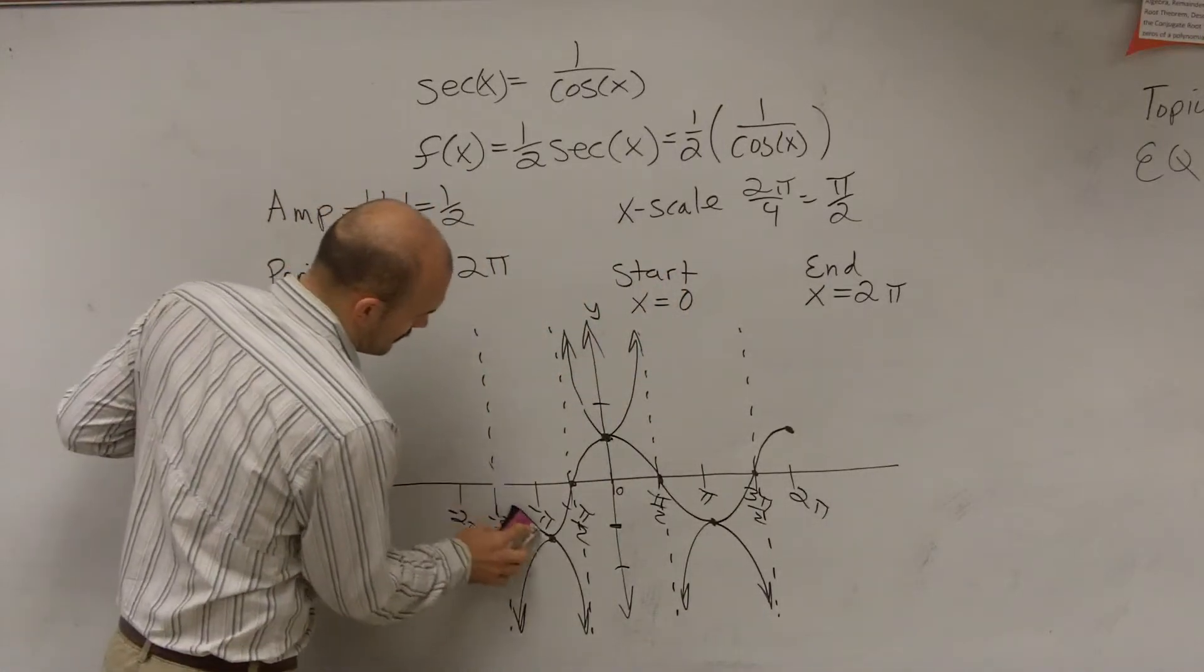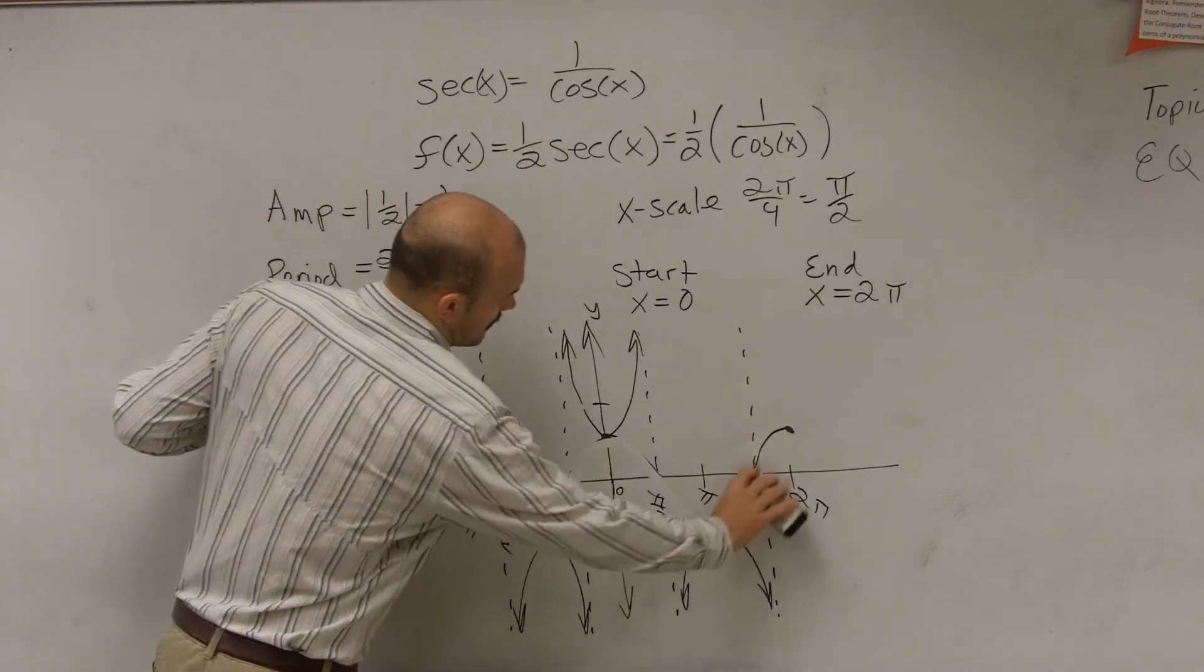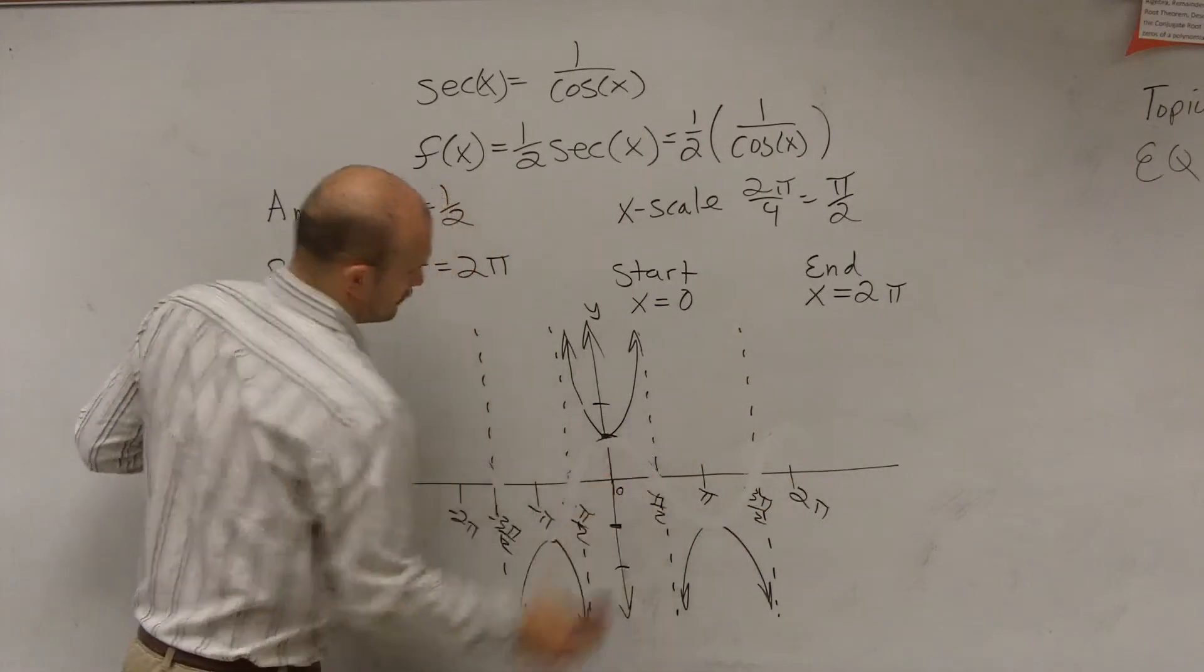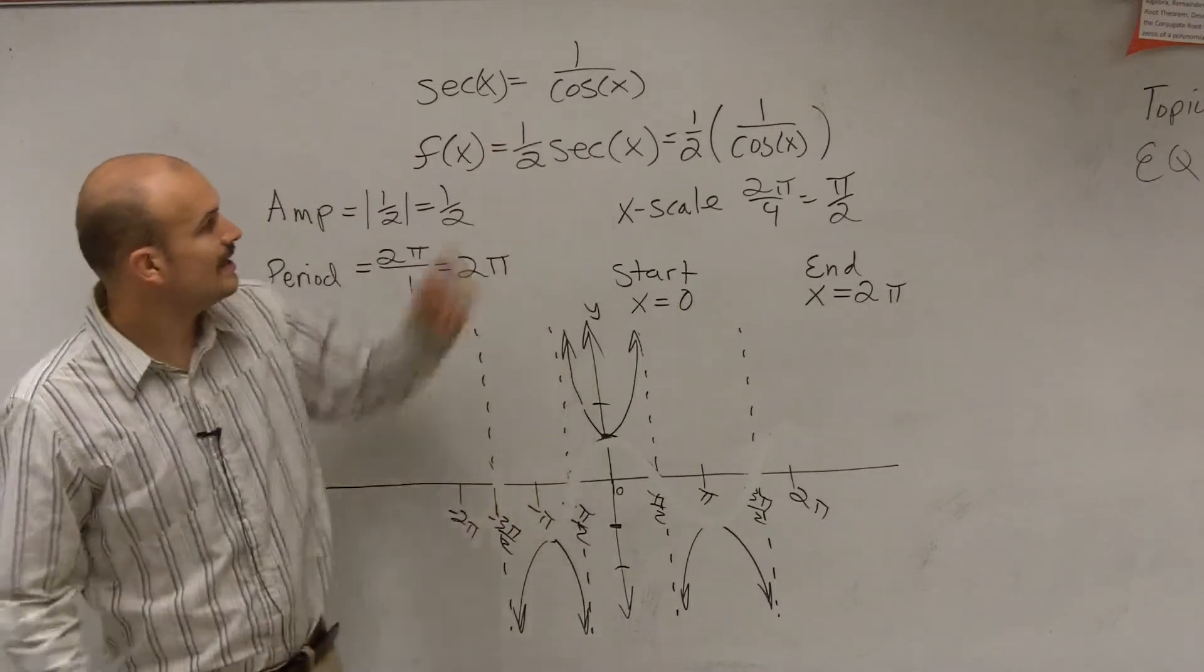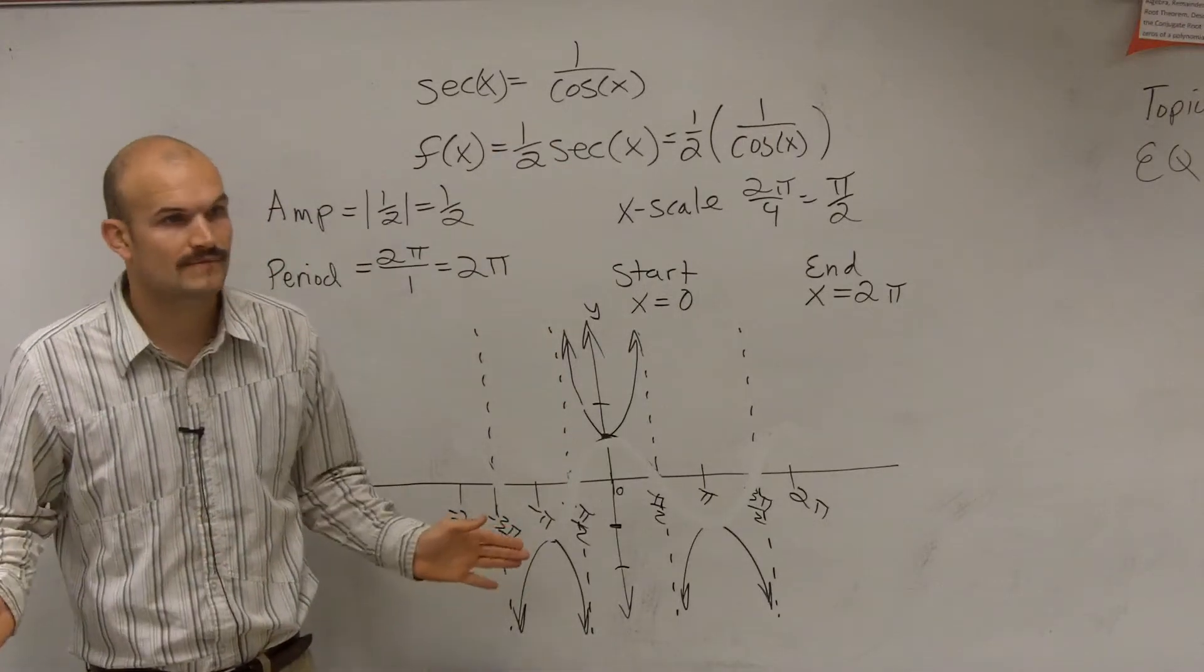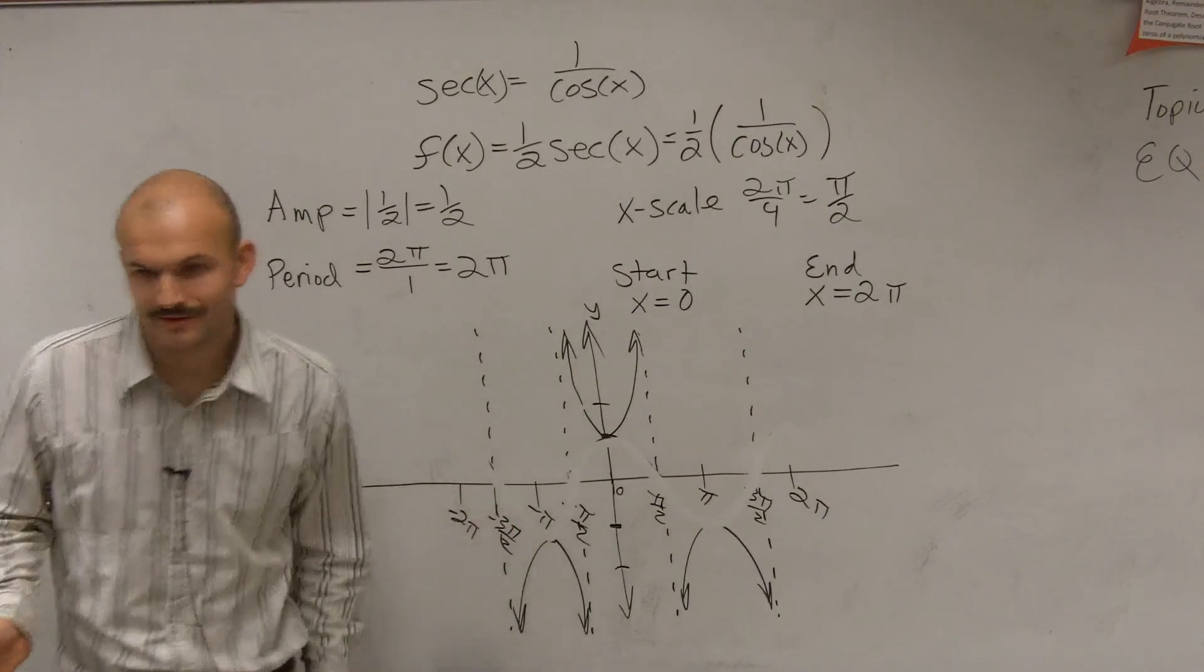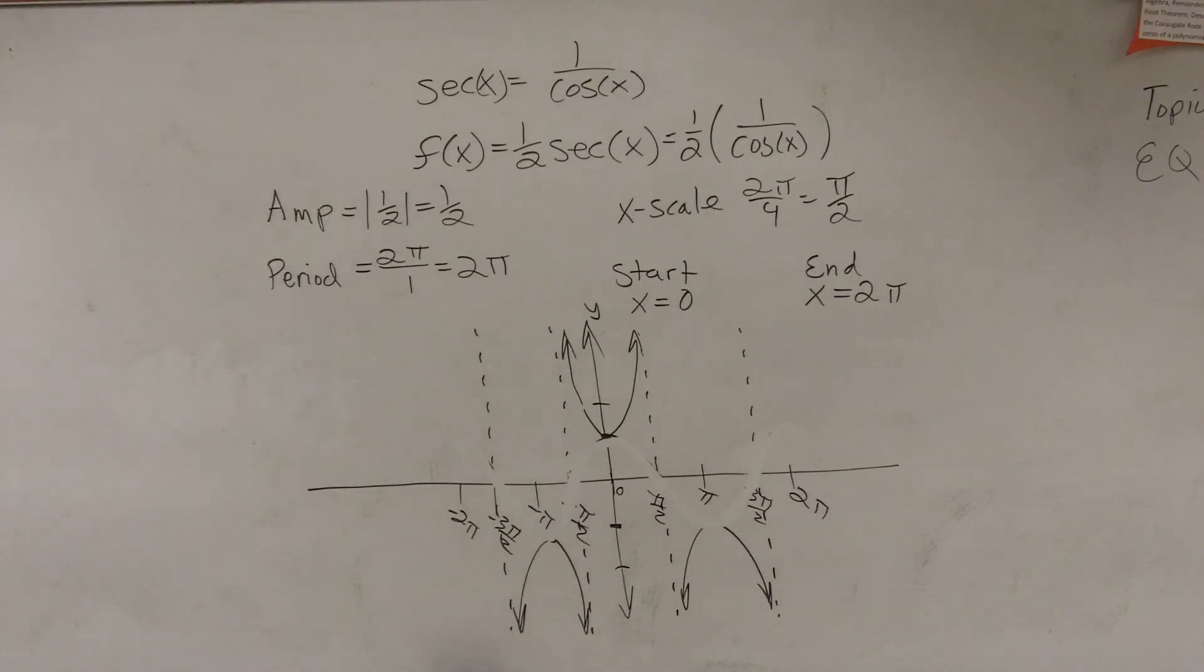And there you go. That is 1 half secant of x. Any questions? Yes? Colton? No? That make a little bit more sense? OK, good. That's a start. So we can start somewhere.